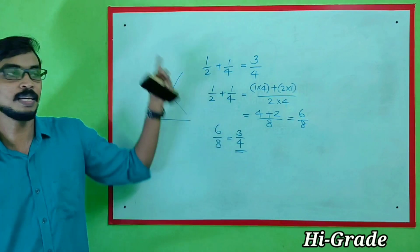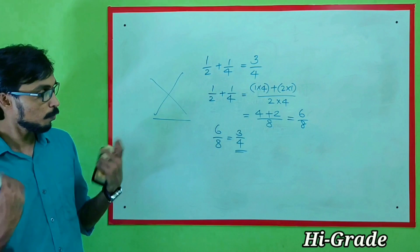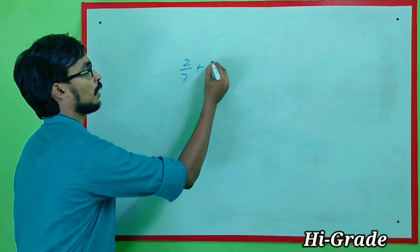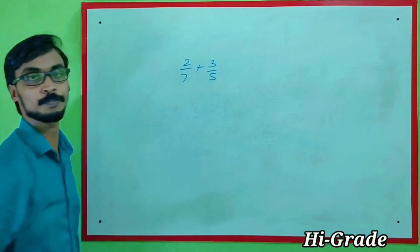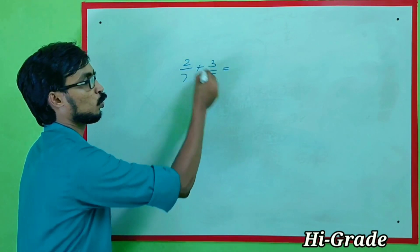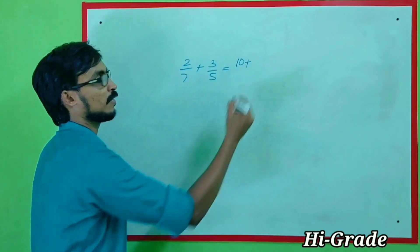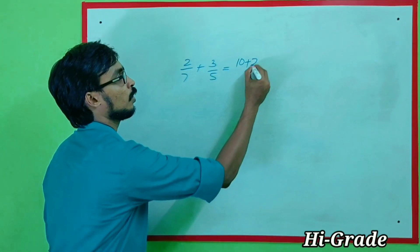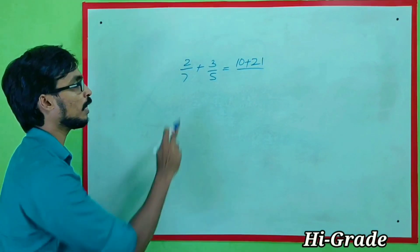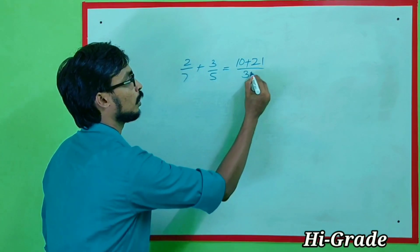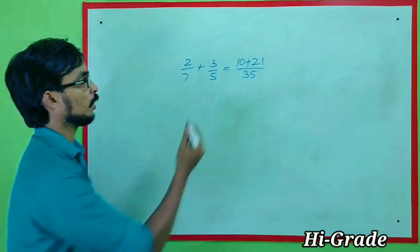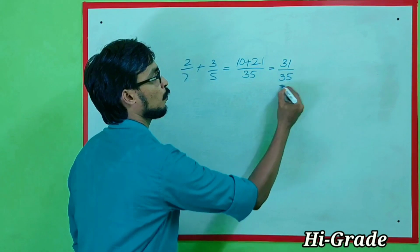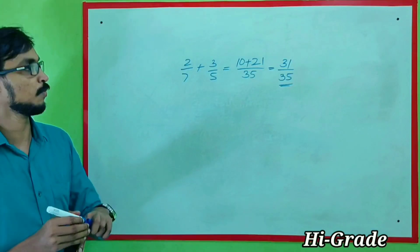Now I will put the two together. How do you do it? 2 by 7 plus 3 by 5. 2 by 5 is 10. Plus 7 by 3 is 21. Divide by 7 by 5 is 35. 10 plus 21 is 31 by 35.